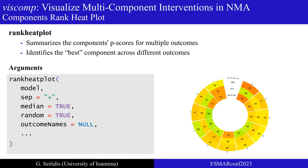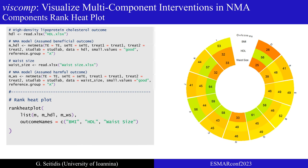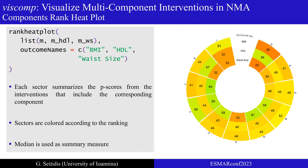In the case where multiple outcomes are included in the analysis, we can identify the best component using the component ranking plot, easily constructed through the function rankingplot. Here, we have constructed the ranking plot based on three different outcomes: high-density lipoprotein cholesterol, waist size, and body mass index. The function requires as input a list containing the network meta-analysis models. In the ranking plot, each sector summarizes the p-scores from interventions that include the corresponding component. The calculation of p-scores is based on the outcome nature — beneficial or harmful — as defined in the NMA model. Sectors are colored according to ranking: dark green reflects percentages close to 100, while dark red reflects percentages close to 0. The median is used as the default summary measure but can be adjusted to the mean.